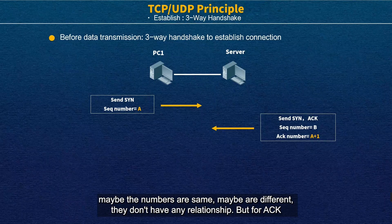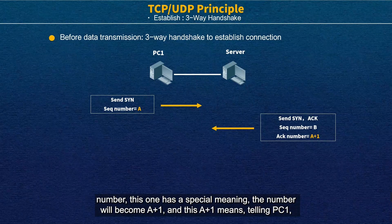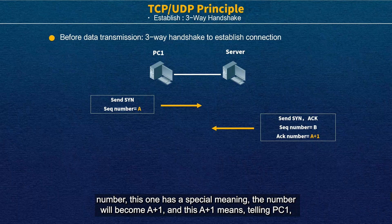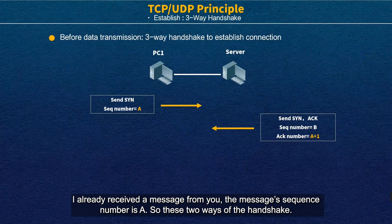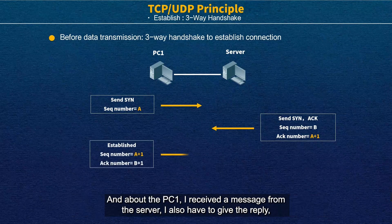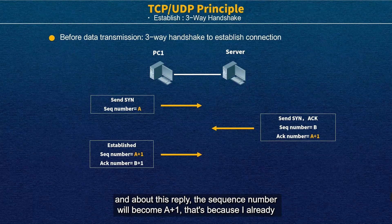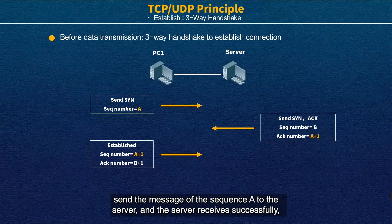The ACK number has a special meaning — it will become A+1. This A+1 means telling PC1: 'I already received the message from you with sequence number A.' So this is the second step of the handshake. When PC1 receives the message from the server, it also has to give a reply, and the sequence number will become A+1, because it already sent the message with sequence A to the server.